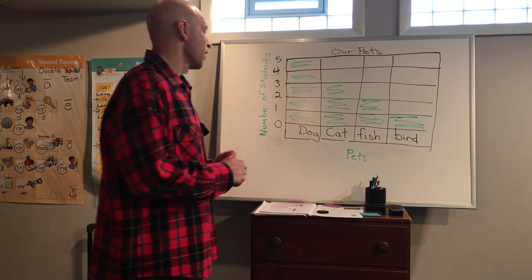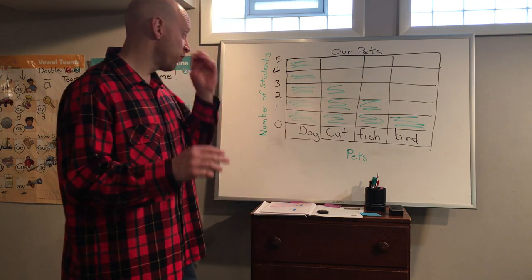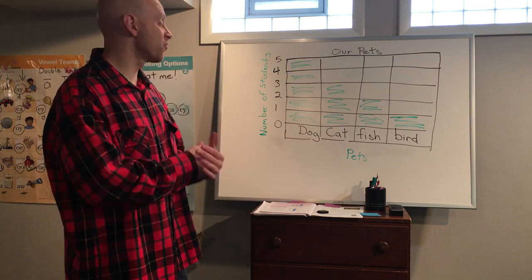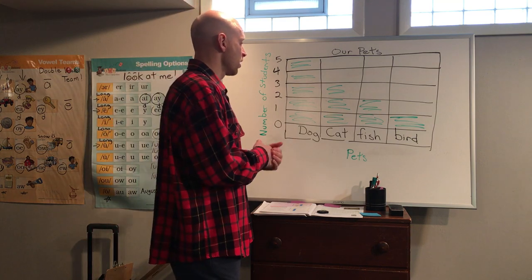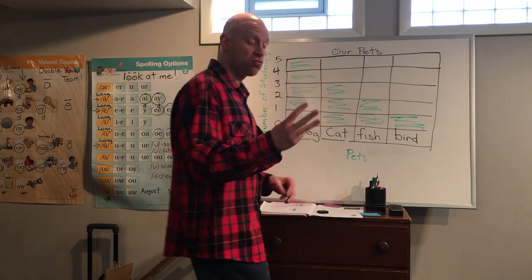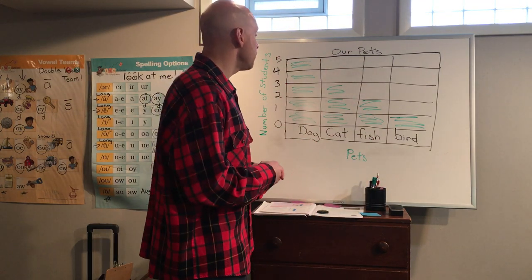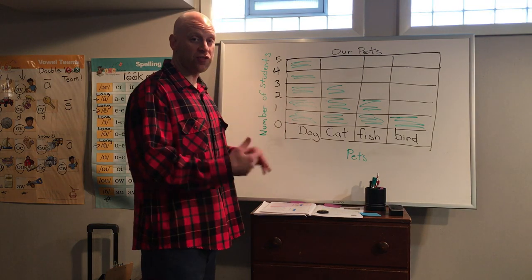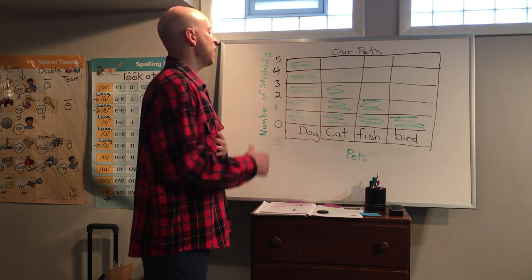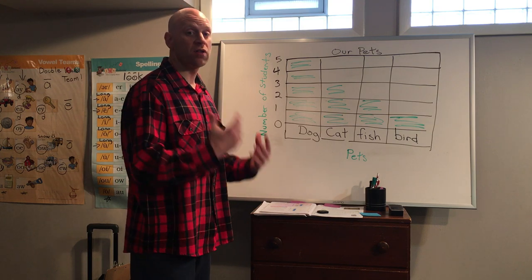We could say, alright, did more people vote for fish and birds compared to cats? Well, let's see. We have two for fish, one for birds. That gives us a total of three. We have three for cats. It would make it even. So there are different questions that you can ask and answer using the bar graph because it's all about getting information.